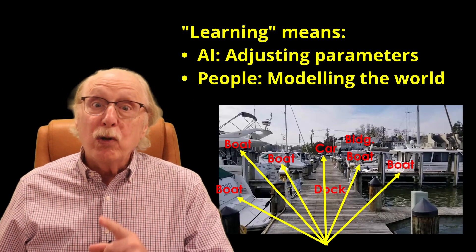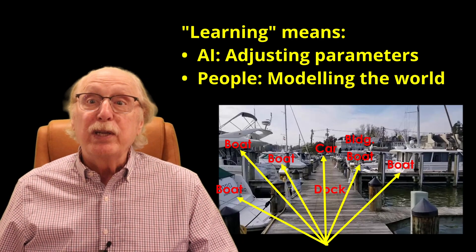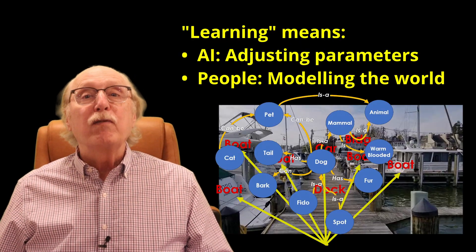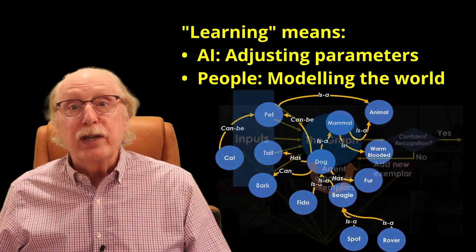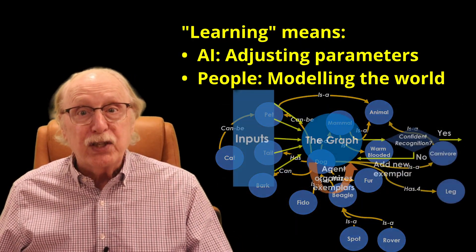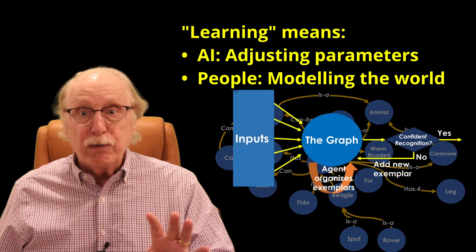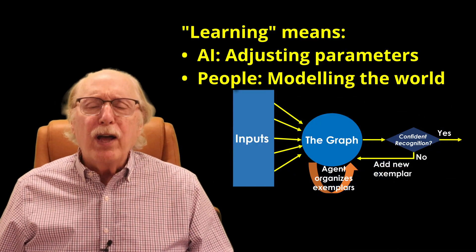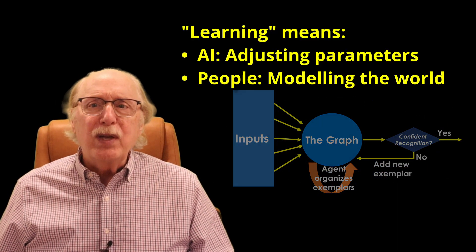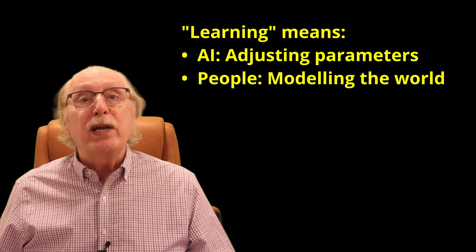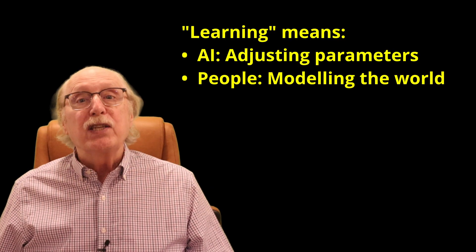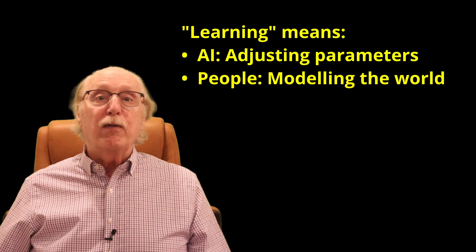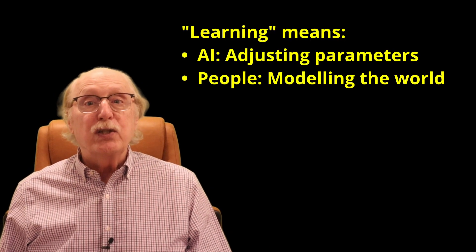For humans, learning means building a flexible internal model of the world — a graph of interconnected concepts, rules, facts, and experiences. These are not the same thing, and the differences explain why today's AI is powerful but still far from human intelligence.